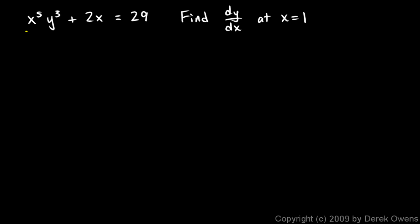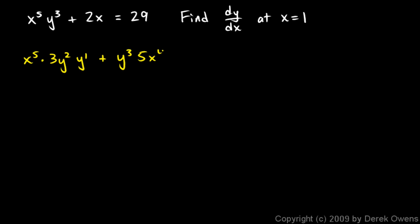This first term is a product, so let's take the derivative with respect to x. That's going to be the first times the derivative of the second, which is 3y squared times y prime — the derivative of y by the chain rule. Plus the second, which is y cubed, times the derivative of the first, which is 5x to the fourth.